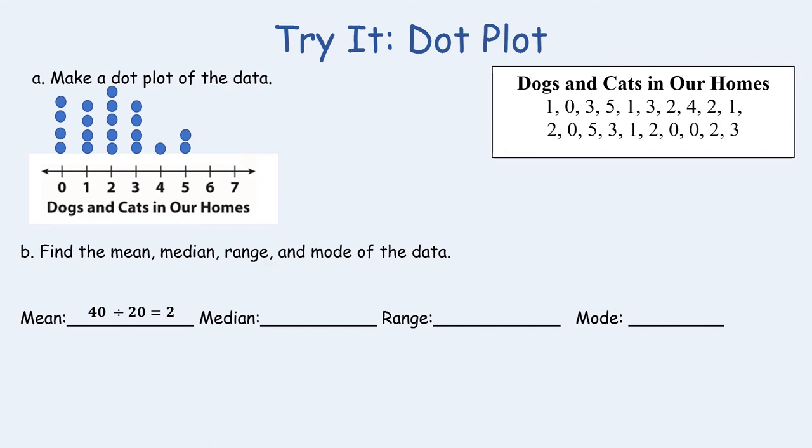So in this case I added them all up and I got 40 and there were 20 data points. So when I divide those two I got 2, which means the average number of cats and dogs that are in a home for this survey is 2.